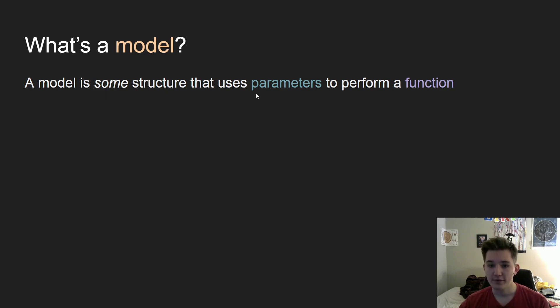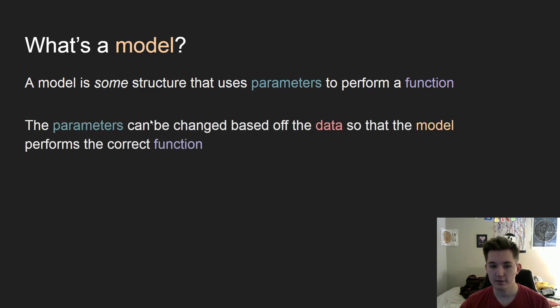And this structure will have some parameters that it will use to perform a function, to calculate what the output is. So we're going to use our data to change our parameters so that the model will perform the correct function. That's essentially what we're doing. And this gets a bit more complicated as we go. But in these basic examples, you'll see that it makes a lot of sense what we're doing.